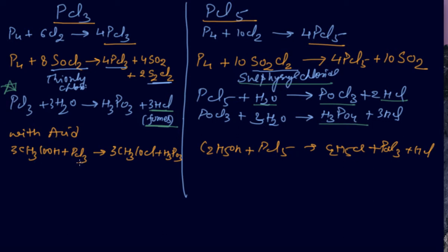With acid, PCl3 gives you CH3COCl, which we have done in the halogen section. Now it is coming as CH3COCl. With PCl5 it will give you C2H5Cl, POCl3, and HCl.